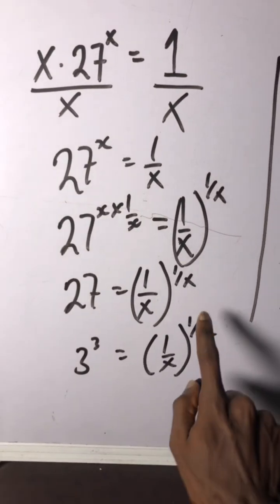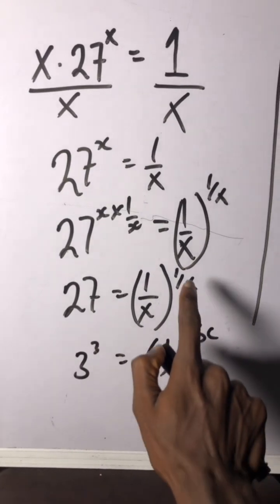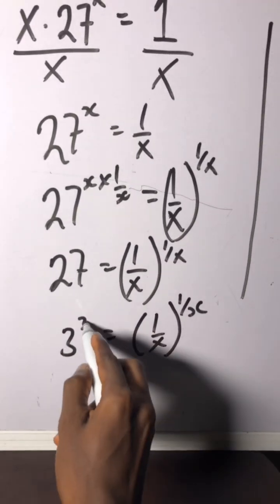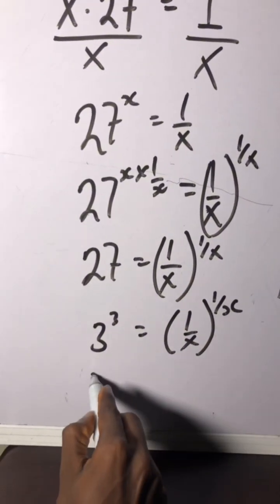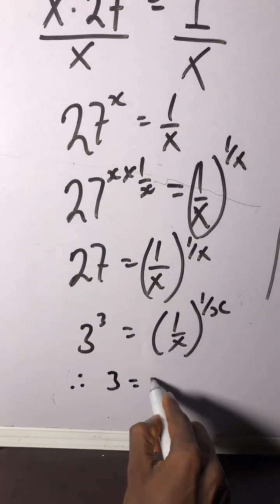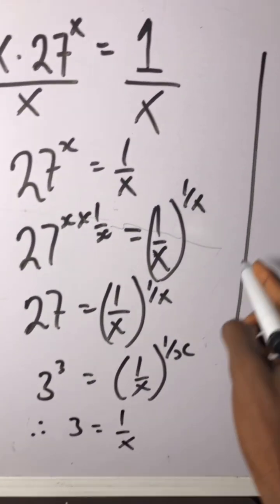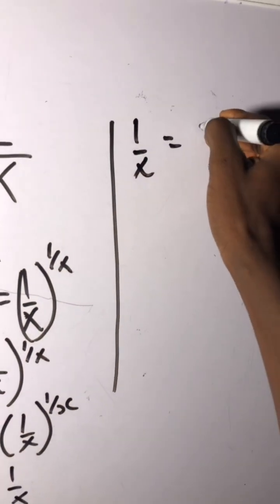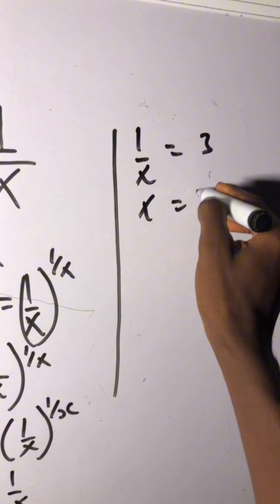and on the other side too, we need to equate either the powers or bases. So now we have, you can do this equals this or this equals this. Therefore, 3 equals 1 over x, which is the same as 1 over x equals 3 and then x equals 1 over 3.